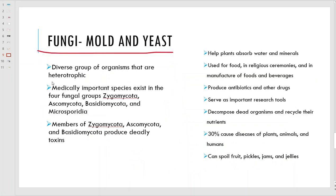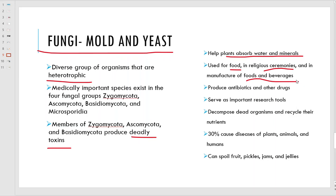Fungi - molds and yeast. These guys are heterotrophic; they don't make their own food, they get it from other things like we do. Medically important species include zygomycota, ascomycota, basidiomycota, and microsporidia. These guys produce some really nasty toxins - poisoned mushrooms. They help plants absorb water and minerals. Some are food, some are used in religious ceremonies, some we use to manufacture foods and beverages. Alcohol is made by fungi - yeast ferments alcohol from sugar anaerobically. Some are used as a source for antibiotics. They use them for research. These guys take dead trees and animals and recycle them.